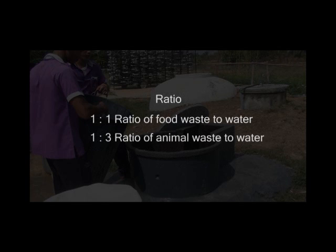However, the food or animal waste used to fill the biogas plant must first be mixed with water according to the following ratios: a 1 to 1 ratio of food waste to water, or a 1 to 3 ratio of animal waste to water.